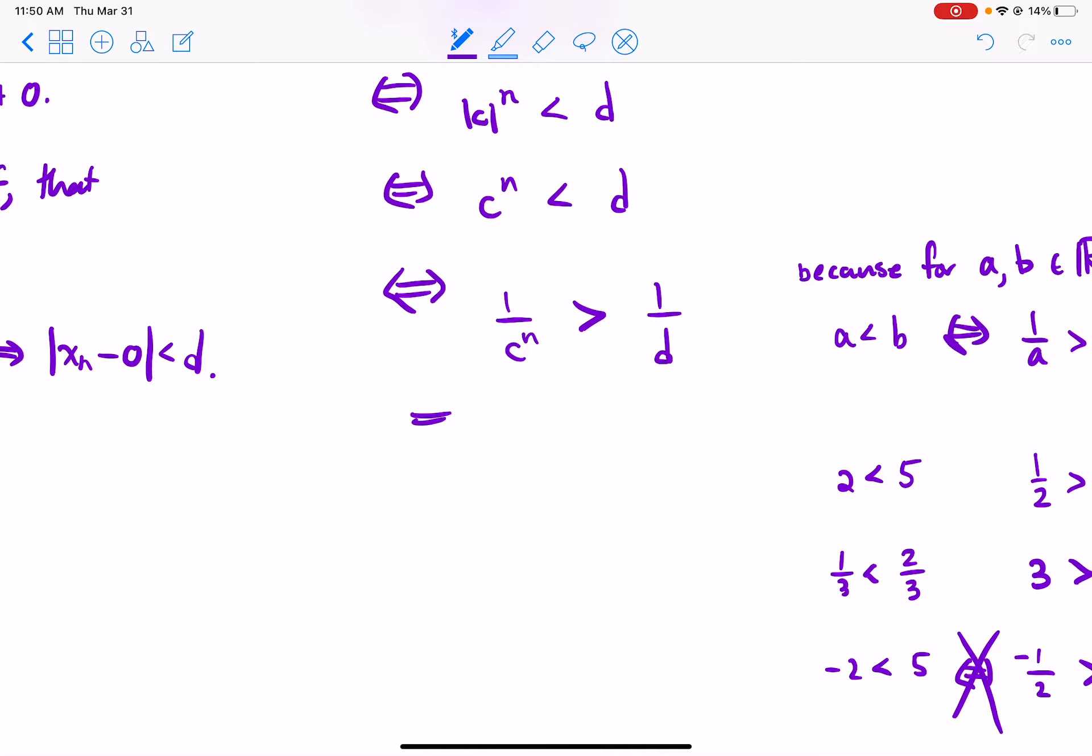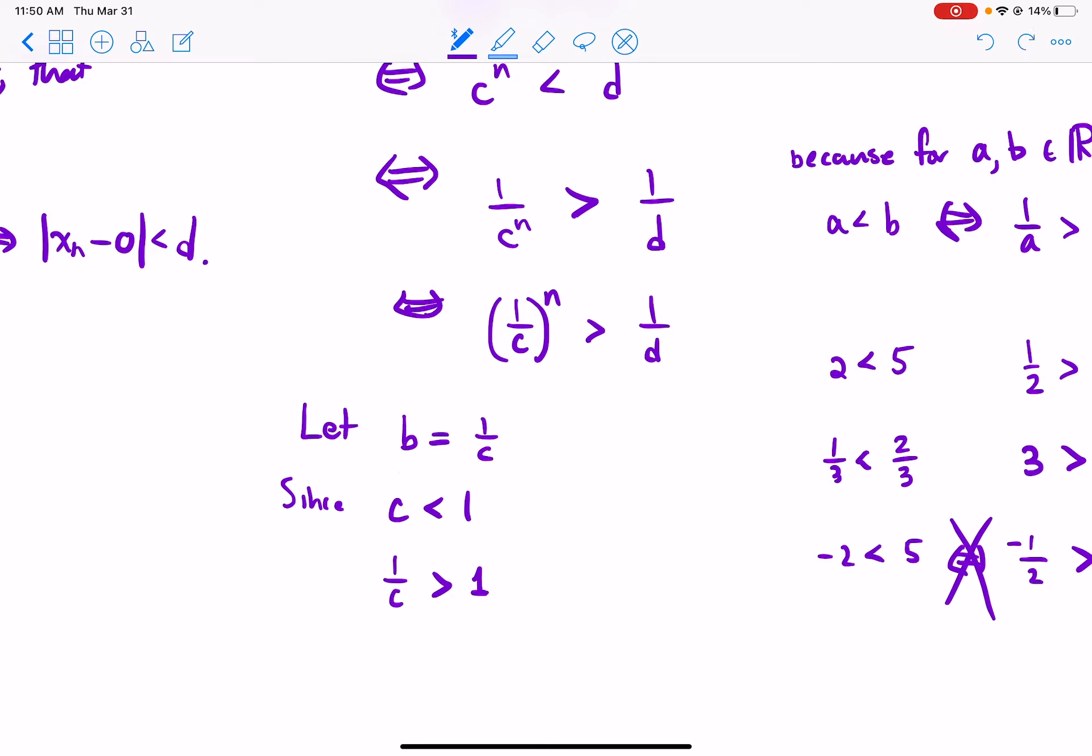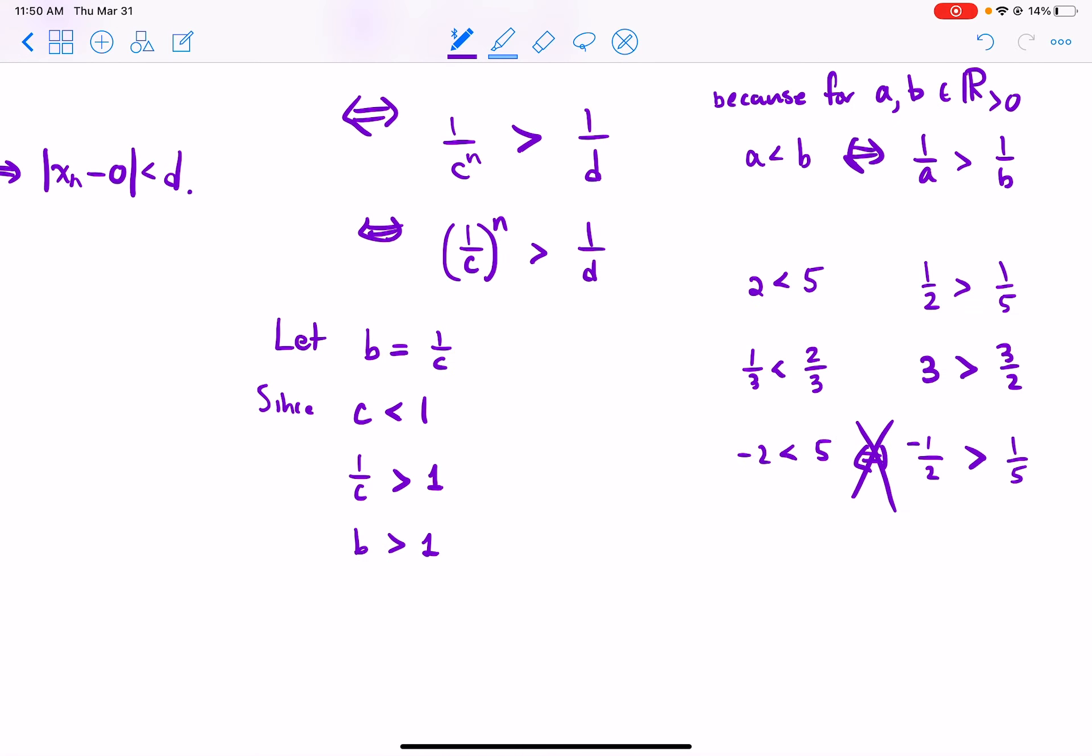Okay. But now look at this. Well, first of all, I might as well just take 1 over c to the n greater than 1 over d. Let b equal 1 over c. Since c is strictly less than 1, then we also have that 1 over c is strictly greater than 1. And so if we're just going to rename it b, then b is greater than 1. But now we have b to the n. If and only if this is true, if and only if b to the n is greater than 1 over d. And let's call, let 1 over d be capital B. So then we can replace this with a capital B.